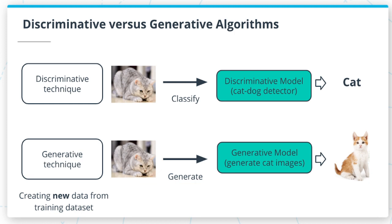Now we will discuss the difference between discriminative — traditional machine learning algorithms — and generative algorithms. In traditional discriminative models, if we provide a cat image as input, it will classify whether that input is a cat or a dog. In the case of generative models, if you provide cat images, the generator or discriminator trains on those images and can generate new cat images, as you can see here.